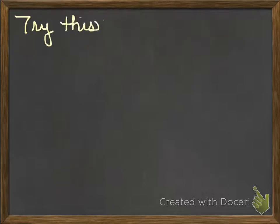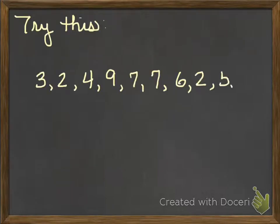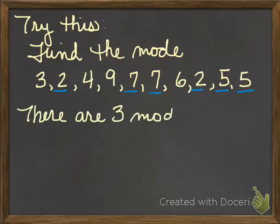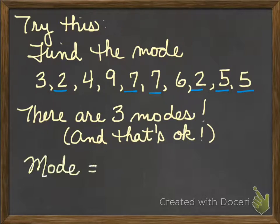You try this one. Looking at my set of numbers, I notice that I have three numbers that are modes. If I have three different numbers that all occur multiple times — they all occur twice, and no number occurs three times — all three of those numbers can be my mode. It's okay to have more than one mode, but not okay to have more than one mean or more than one median. So it's okay if you have more than one mode.